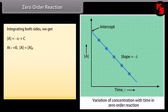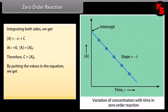Integrating both sides: A = −KT + C. At T = 0, A = A₀, therefore C = A₀. Substituting: A = −KT + A₀. This can be rearranged to: K = (1/T)(A₀ − A). Hence, the integrated rate equation for zero-order reaction is K = (A₀ − A)/T.